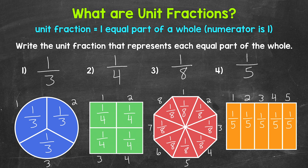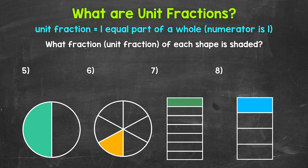Let's move on to numbers five through eight, where we're going to write what fraction — and these will all be unit fractions — of each shape is shaded. Starting with number five: the whole circle has been divided into two equal parts. So our denominator is two. One of the two equal parts is shaded, so our numerator is one. Our unit fraction is one half.